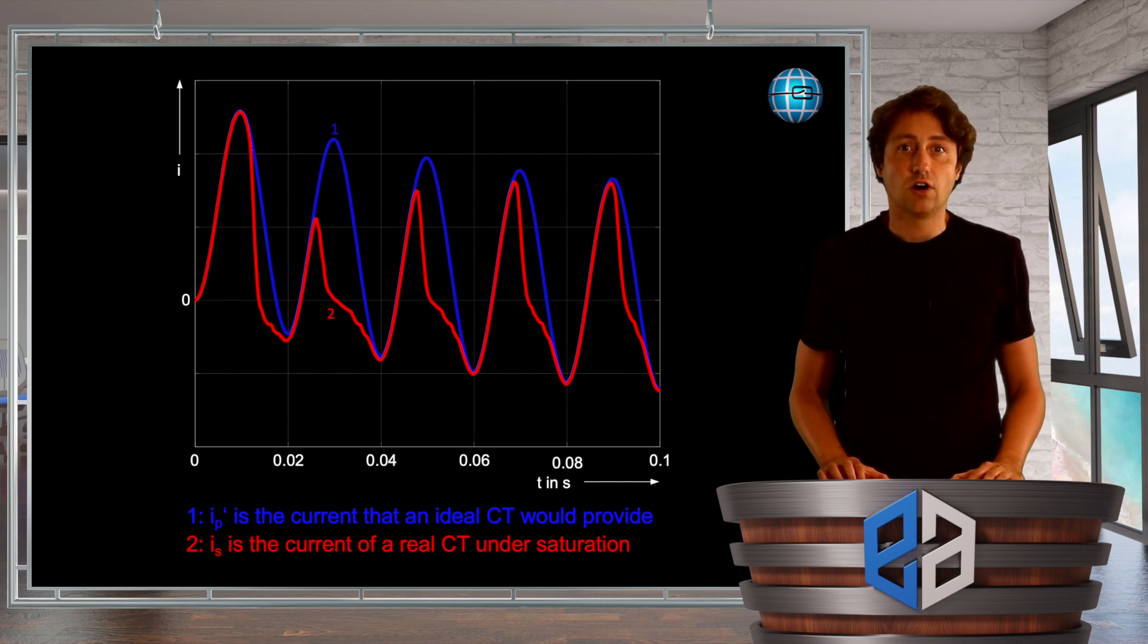Usually during normal operation this is not recognizable or predictable, but when the next fault occurs there may be an over or under functioning of the protection system due to the secondary current not being transmitted correctly by the saturated core of the current transformer.